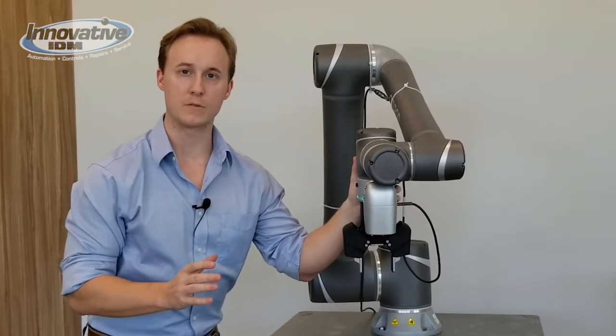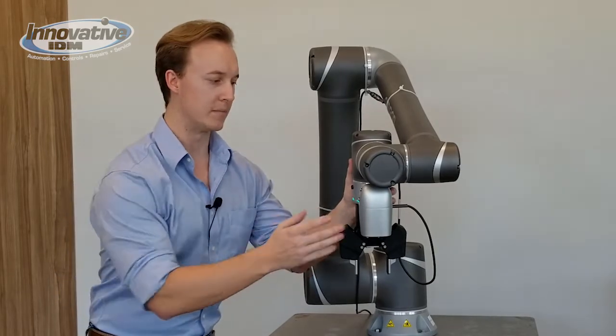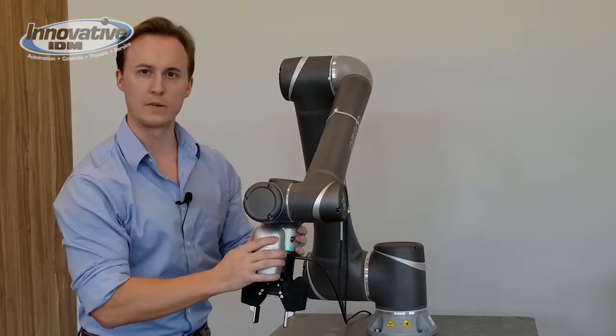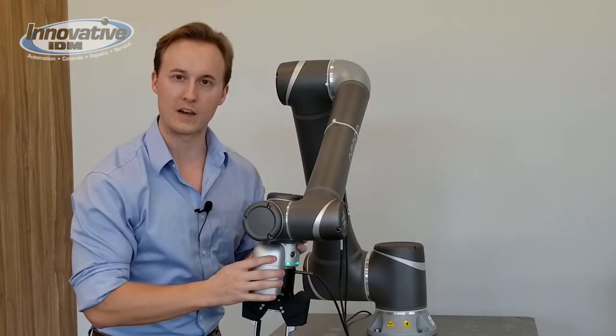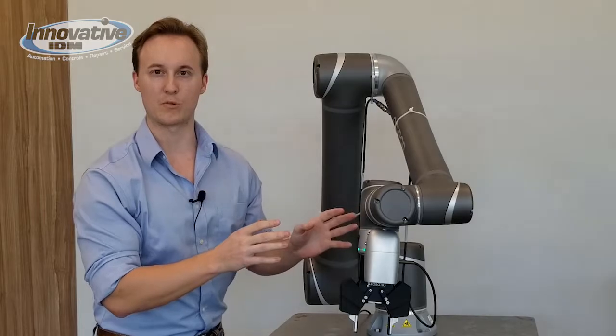The Omron TM also features a direct touch interface. What we're able to do is manipulate the arm of the robot and program points in free space without interacting with the software at all. This is a great way to get a rough outline of what the program looks like and the motion profile without any advanced programming or intervention.